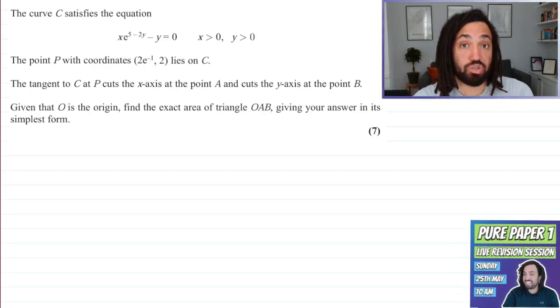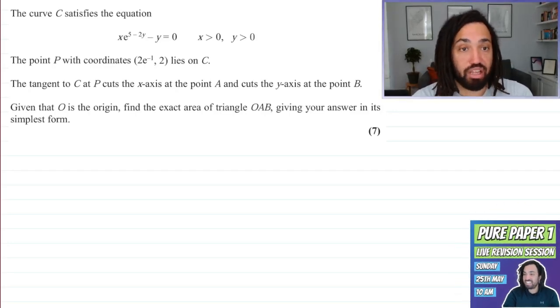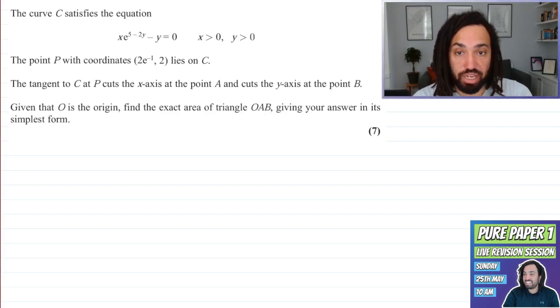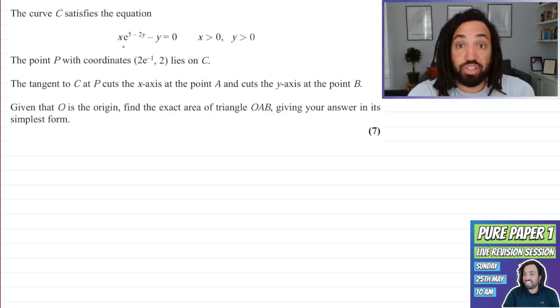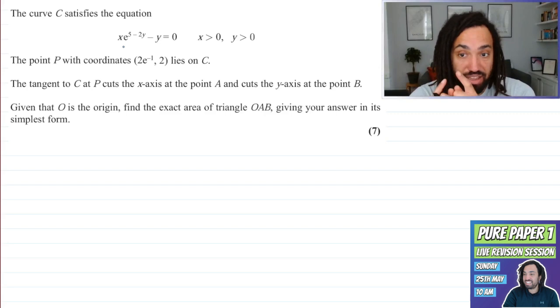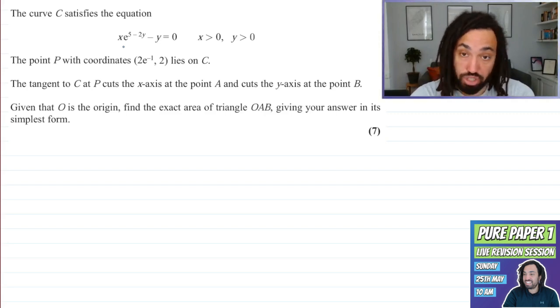Hello, my name is Mr Asprey and I've got another tricky question here for you today. It says that the curve has this equation, we've got a point on the curve and then it wants us to find the tangent so that we can then work out the area of the triangle OAB. Right, no problem. Pause the video, have a go yourself and then listen for the solution.